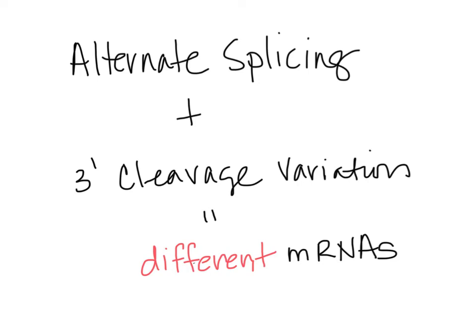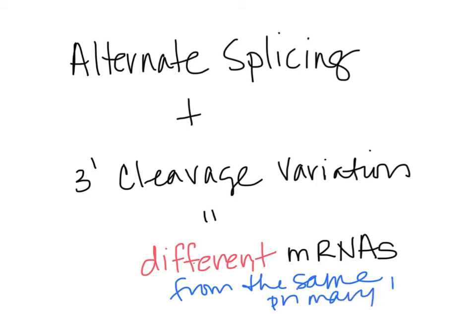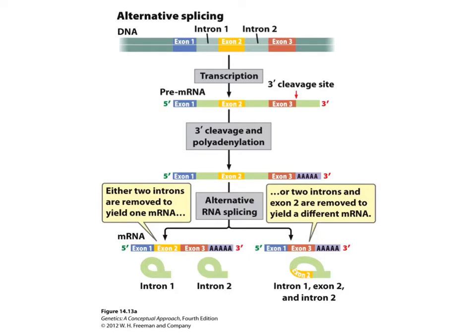Hello everyone. This is going to be a short quickie lecture capture about alternative splicing and 3' cleavage variation, and how that results in different mRNAs from the same primary transcript — the same pre-mRNA.